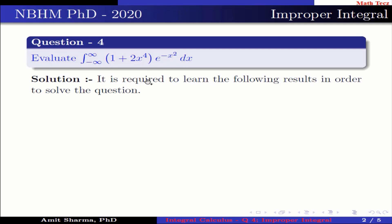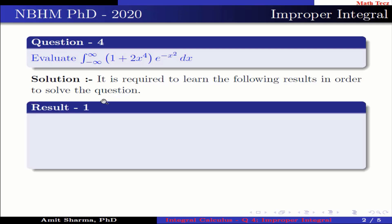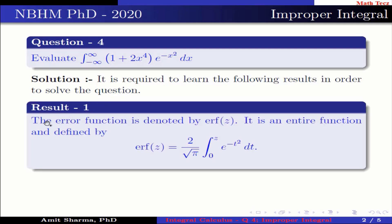It is required to learn the following results in order to solve the question. Result number 1: the error function is denoted by erf(z). It is an entire function and is defined as erf(z) = (2/√π) · ∫₀ᶻ e^(−t²) dt.